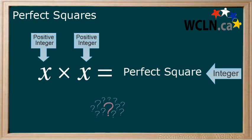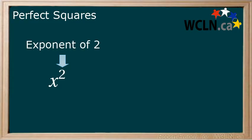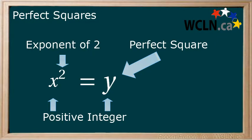The product of two equal positive integers can also be written as the positive integer squared. When a number has an exponent of 2, we can say that the number is squared. Perfect squares are integers that can also be written as positive integers that are squared. It is okay if you don't remember or know what a positive integer is — we will go over it in the next slide.